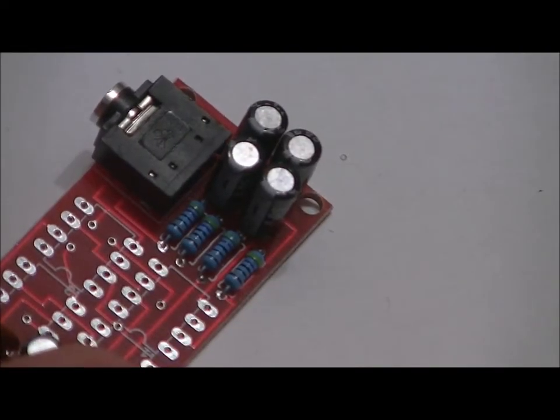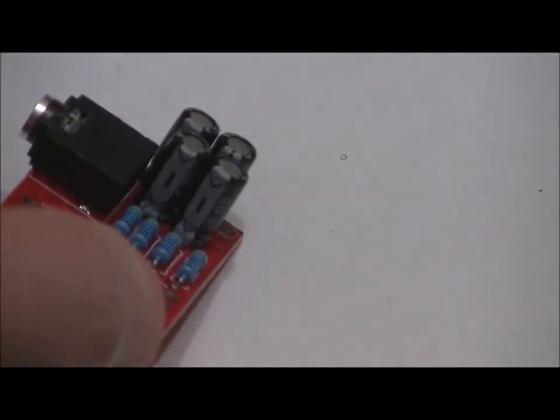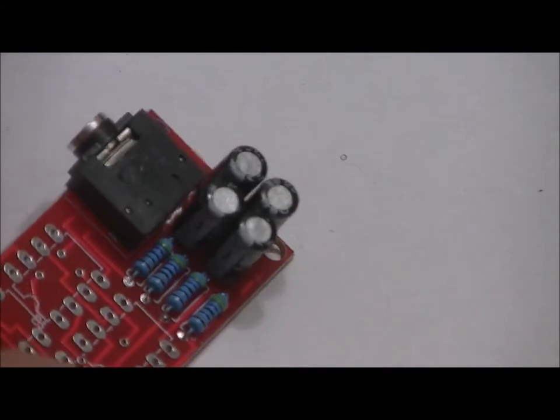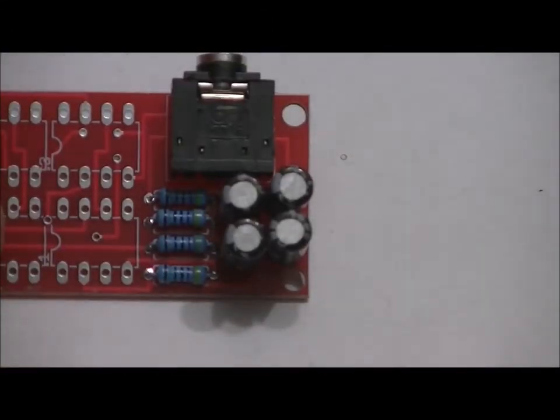There's a white stripe indicating the negative side on the capacitors. It might be hard to see in the video, but all of the white stripes on the top and on the left side of the capacitors should be facing left from this perspective. That's your double check.